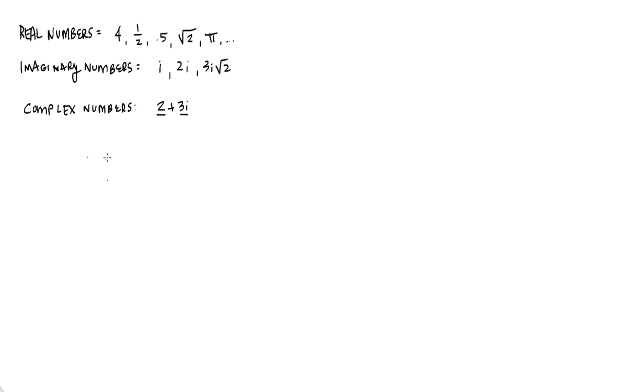Complex numbers have the form a plus bi. Complex numbers take the form a plus bi. This is actually called the standard form for a complex number.